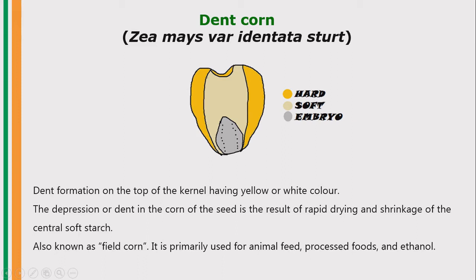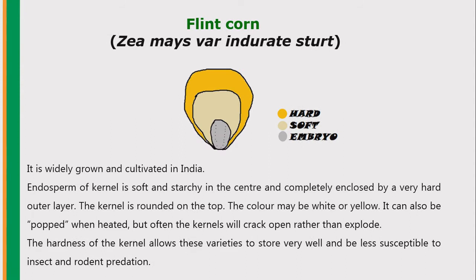Dent corn is also known as field corn. Due to its high starch content it is primarily used for animal feed, processing, and for the preparation of ethanol.